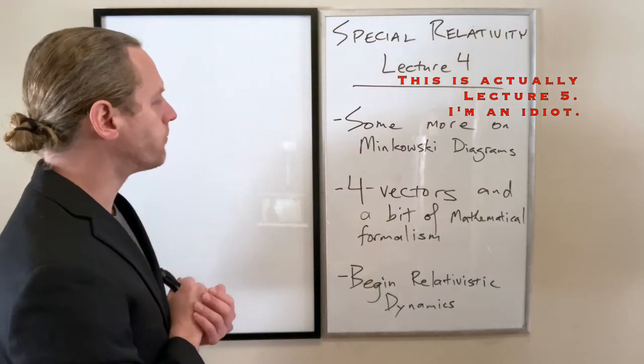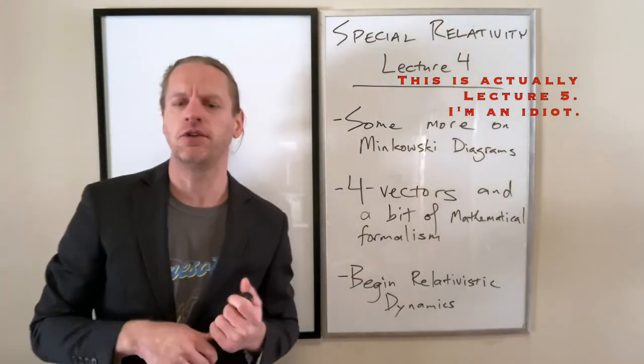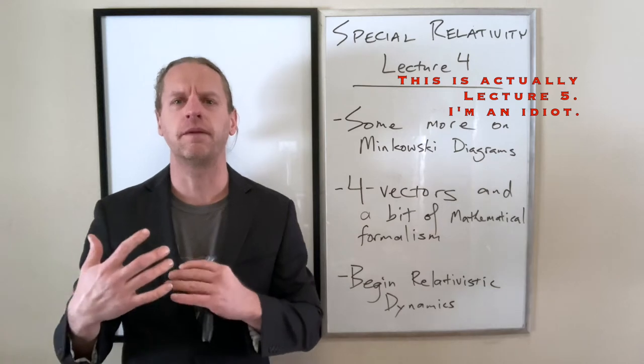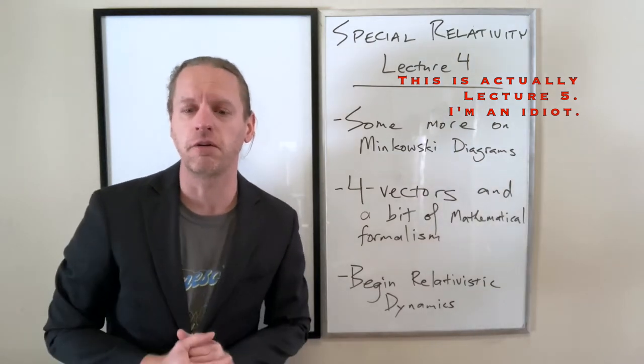And then we're going to slightly formalize it into what we call four vectors, and this is where we get into more of the formal mathematical view of relativity.